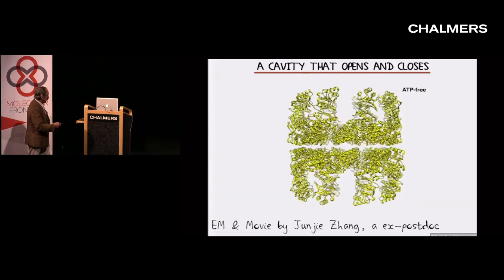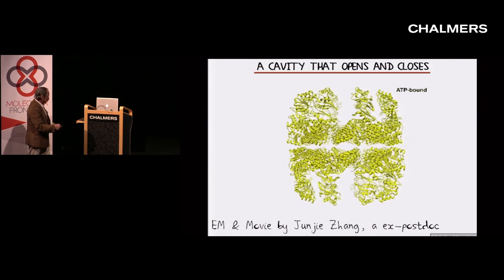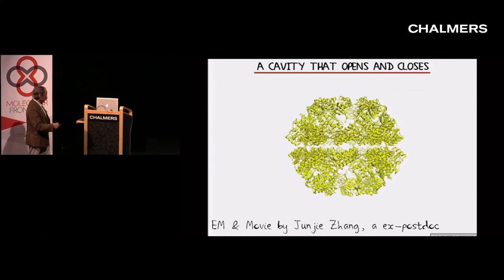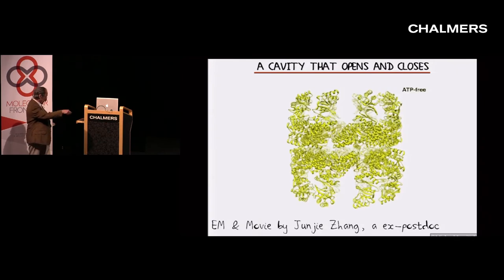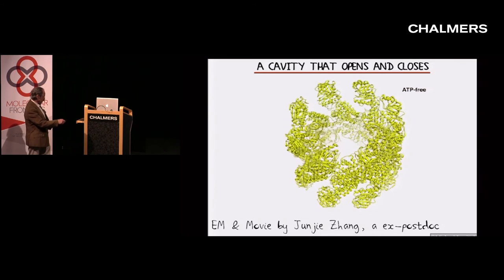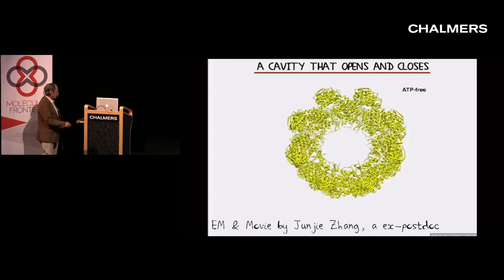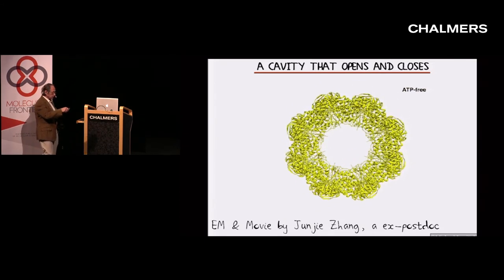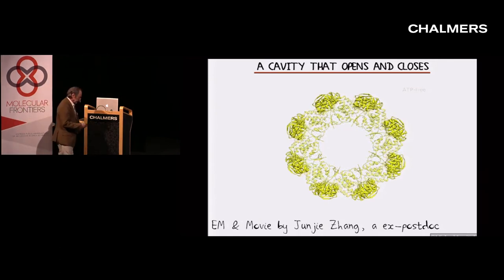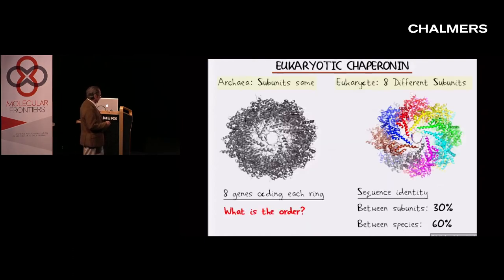The Chaperonin is a machine. It basically has eight subunits in two rings. It binds ATP and then closes down on the substrate. This molecule in some way takes unfolded proteins and catalyzes their folding.